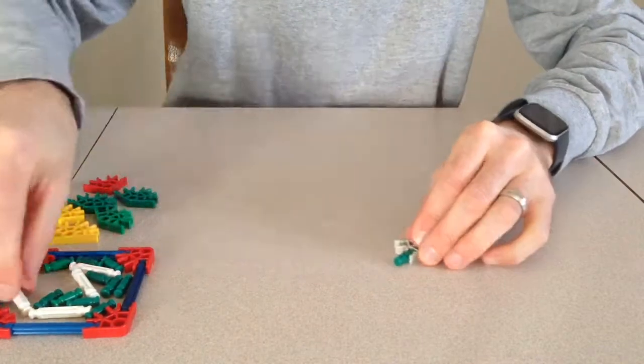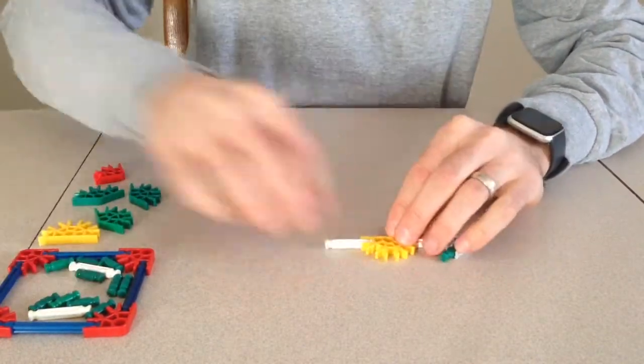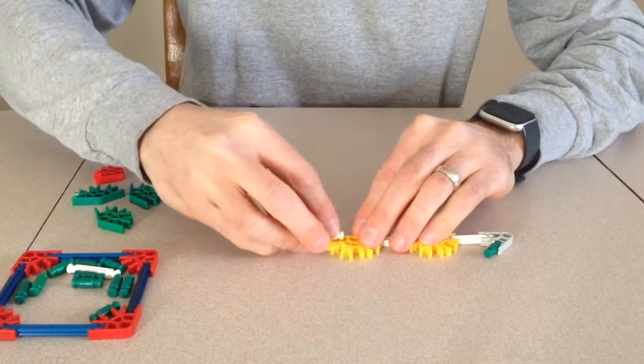I will now make the sides of the jet ski. I will make two of these, one for the right side and one for the left side.